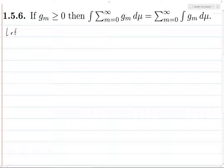We're going to let F_n be the sum from m equals zero to n of g_m. Then certainly F_n is less than or equal to F_{n+1}, because F_{n+1} is just F_n plus g_{n+1}, and g_{n+1} is greater than or equal to zero. So you're only increasing it.